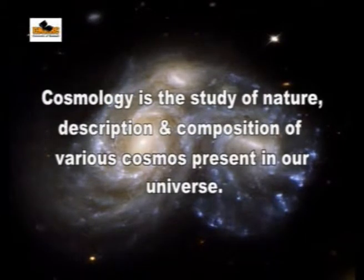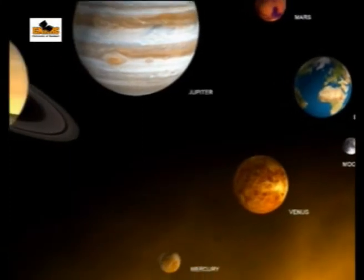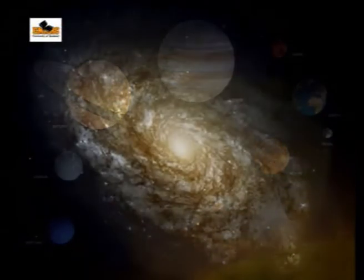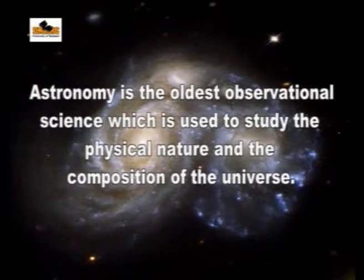Cosmology is a science used to study the nature, description, and composition of various cosmos present in our universe. The cosmos can be in the form of our solar system, a galaxy, the sun, a star, or any astronomical object. To know the details of cosmology, we come across two basic definitions: astronomy and astrophysics. The universe contains galaxies, our solar system, and billions and billions of stars.